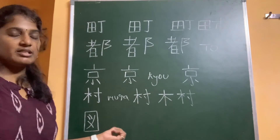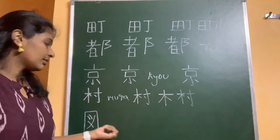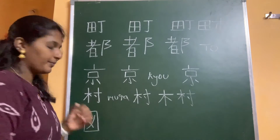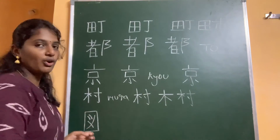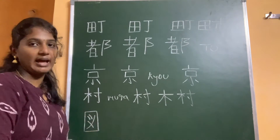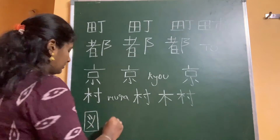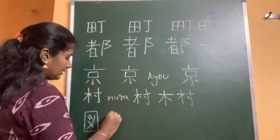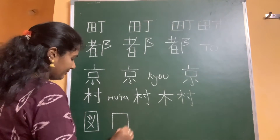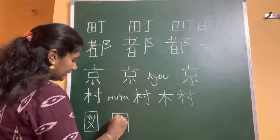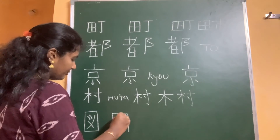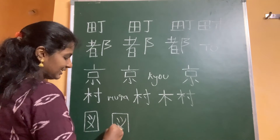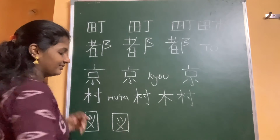This is the kanji that means Hakka or Jo, which means drawing or plan. First stroke, second, third, fourth, fifth, sixth and seventh.